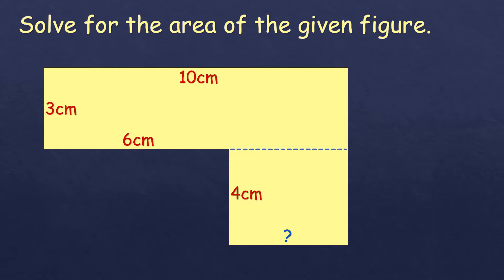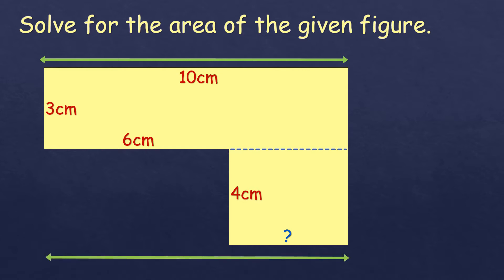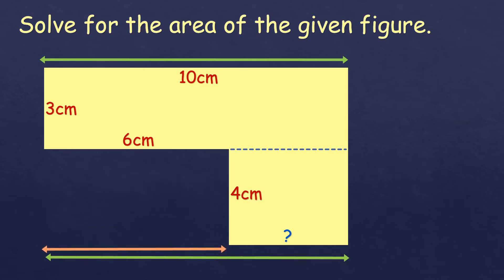Now let us find the missing side first. We know that this side is 10 cm, and the opposite side must also be 10 cm. We know that this part is 6 cm, and what's lacking to make it 10 cm is 4 cm, because 6 plus 4 is 10 cm. So that means the figure at the bottom is a square.